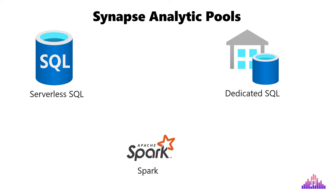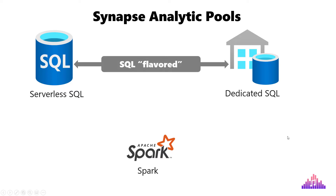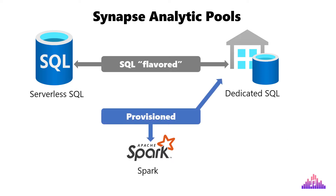Now that you know the underlying architecture from a high-level perspective of Azure Synapse Analytics, let's talk about Synapse analytic pools as a core part of the whole architecture. There are three different engines within the Synapse workspace. Two of them are SQL-based: dedicated SQL pool and serverless SQL pool. The third is based on Apache Spark technology — the Apache Spark pool. Also, two of them are provisioned — dedicated SQL pool and Apache Spark pool — while the third, serverless SQL pool, works as a serverless solution.